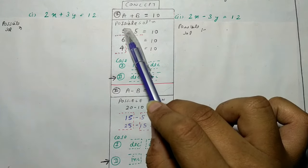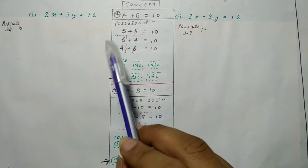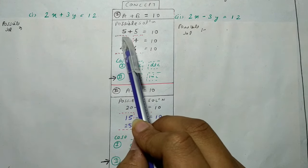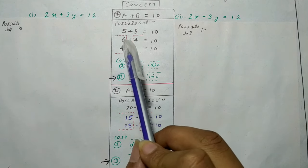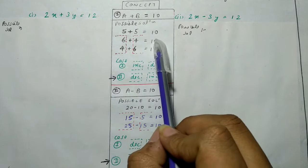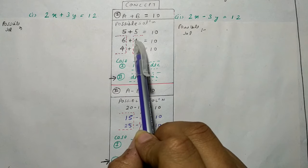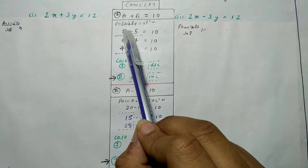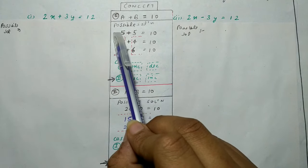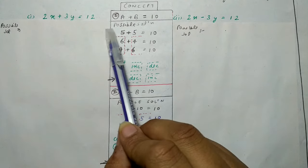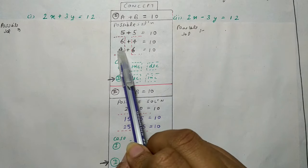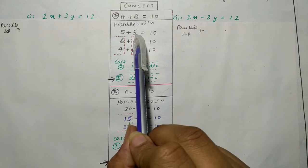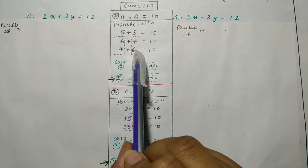Initial solution 5 + 5 = 10 से, अगर A को 1 बढ़ा दें तो 6 आता है, और 6 में 4 add करने से 10 आता है - दूसरा solution 6 + 4 = 10। अगर A को 1 कम करें तो 4 आता है, 4 में 6 add करने से 10 - तीसरा solution 4 + 6 = 10।